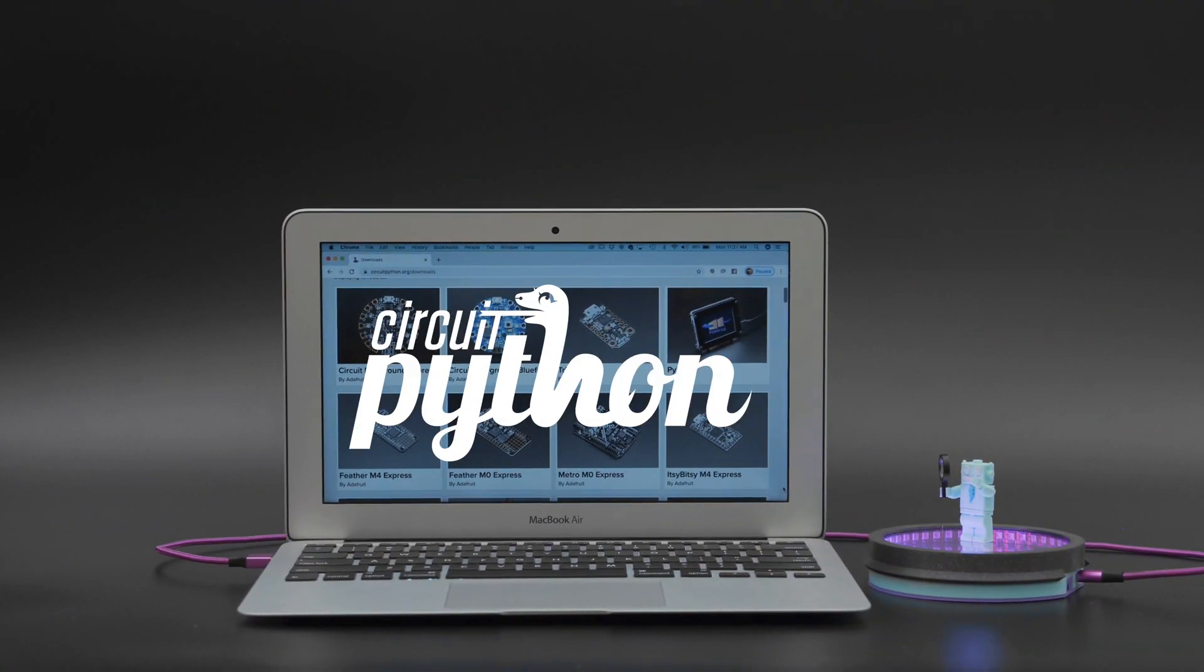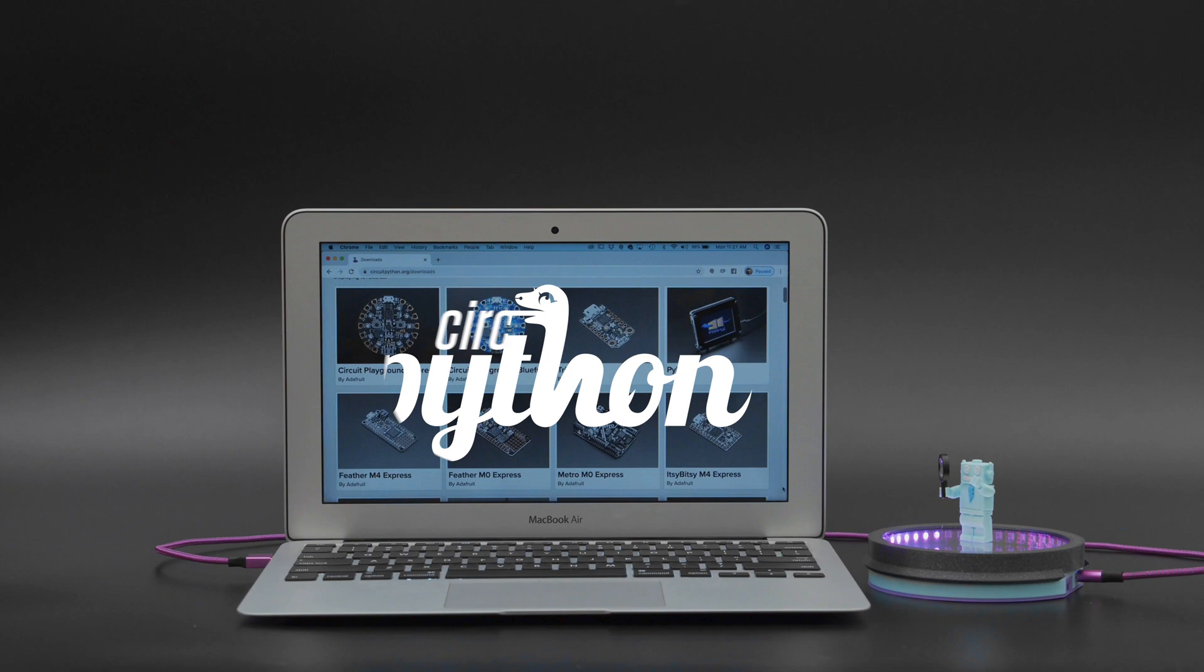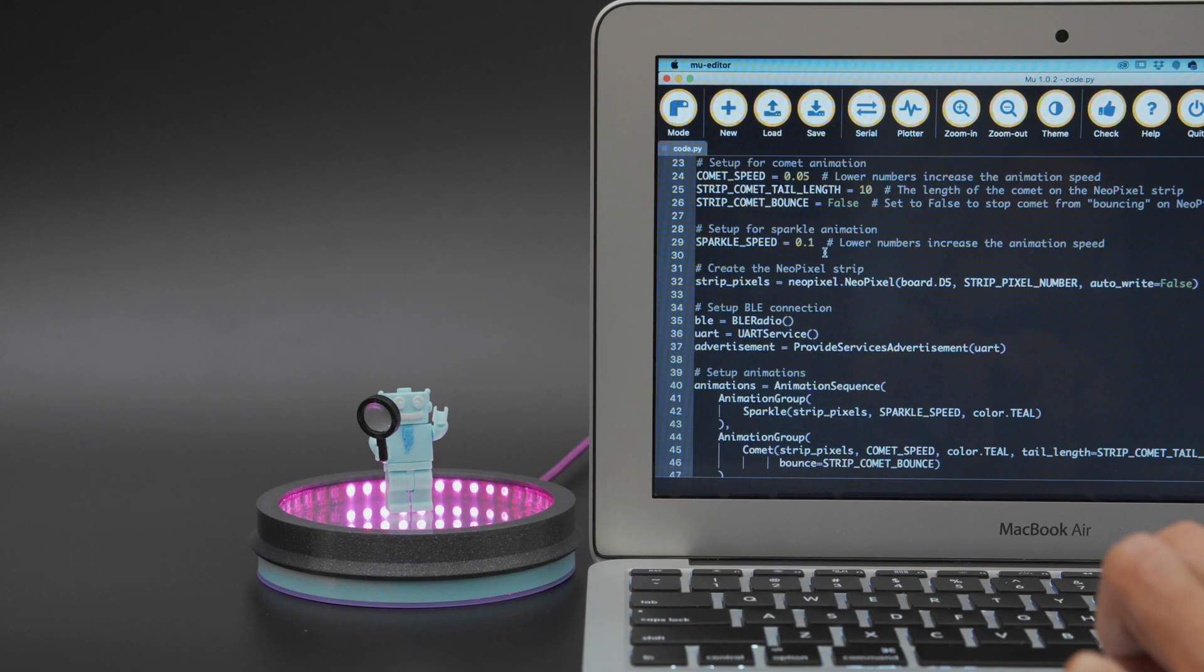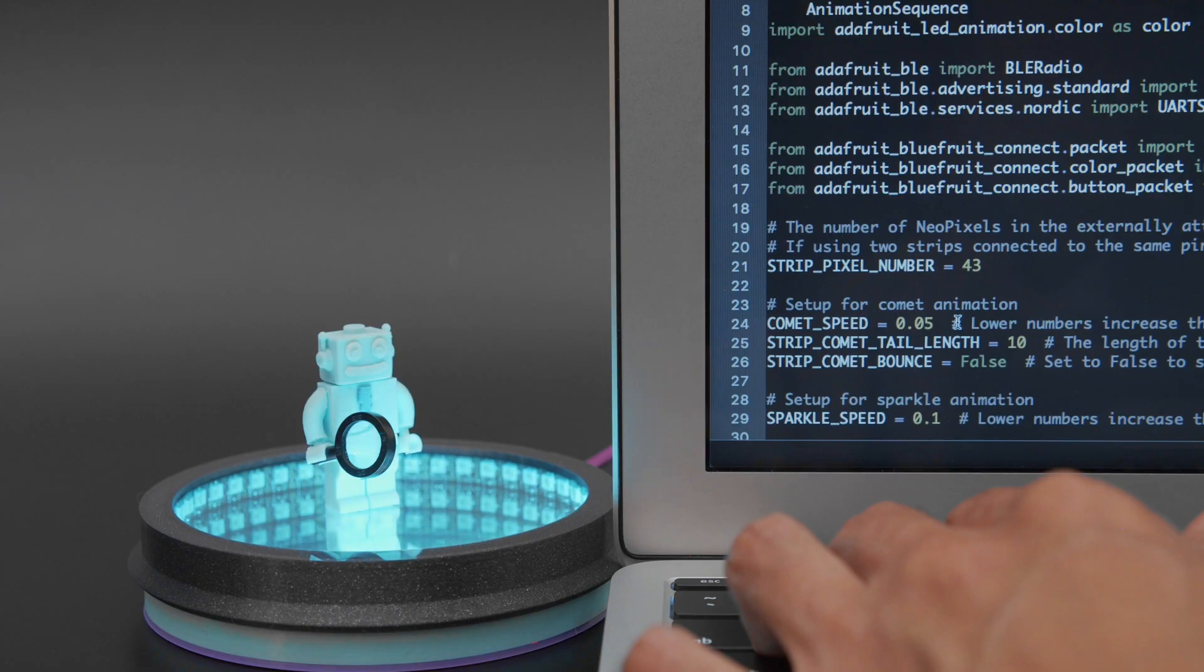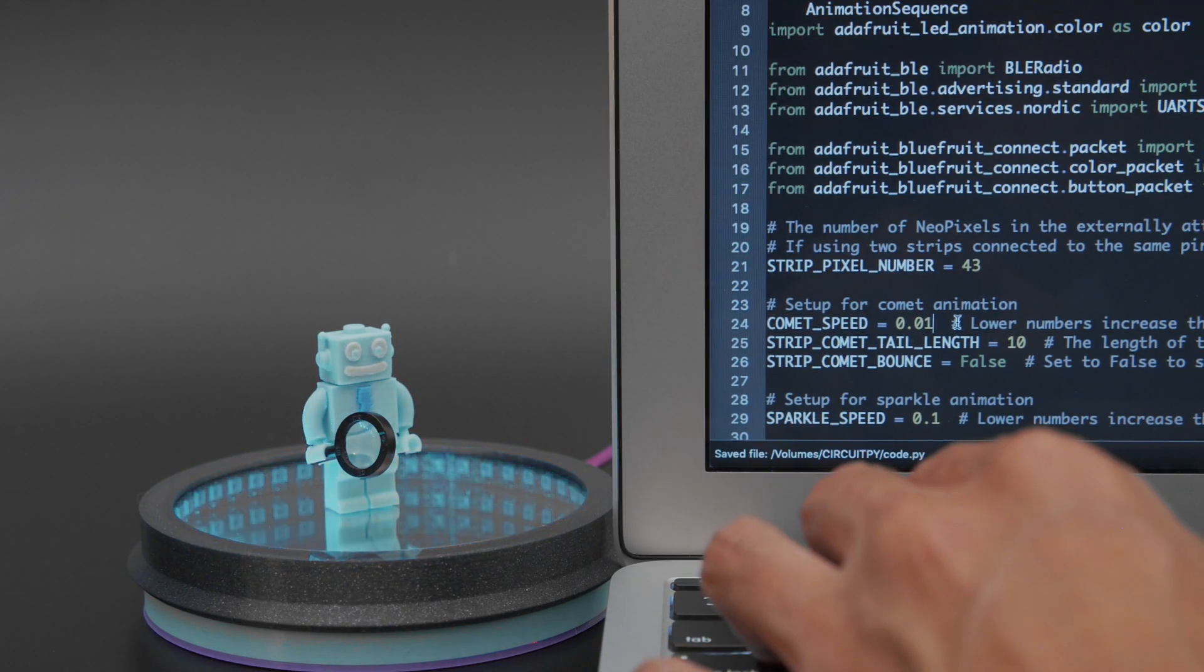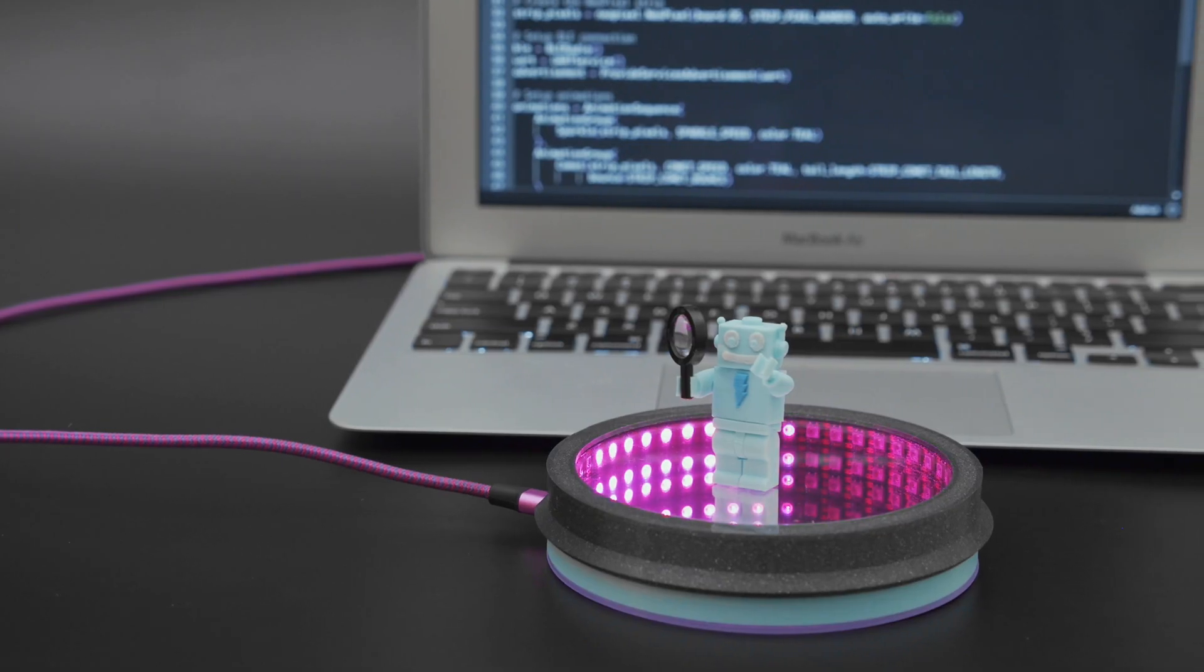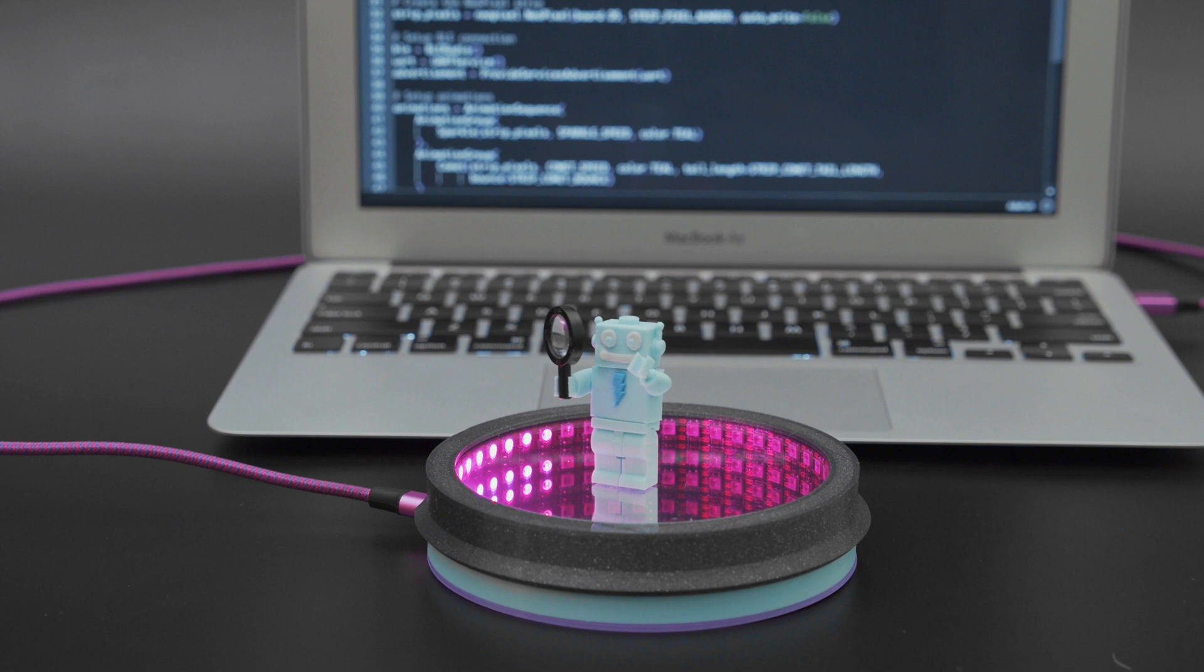The code for this project was written in Adafruit's CircuitPython. It's really easy to set up hardware with Bluetooth using the BLE library for CircuitPython. With the LED animation library you can customize the settings and create different effects. The code is on GitHub so you can download and modify it to work with your projects.